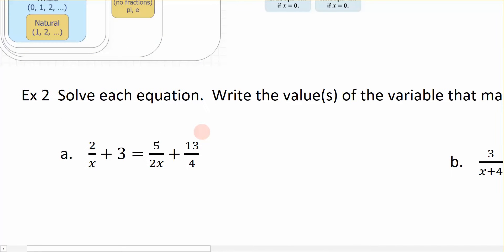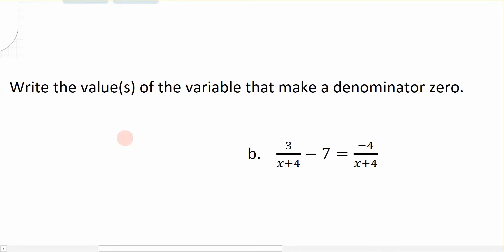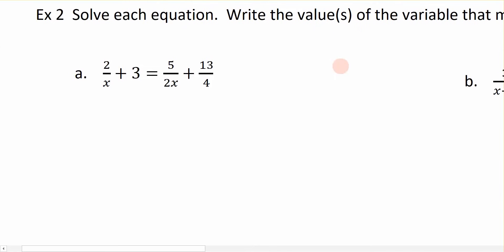I have two examples that we're going to look at here. We're going to solve this first equation for the variable x, and we're going to also write the value or the values of that variable that could make the denominator zero. So we want to think about that ahead of time.